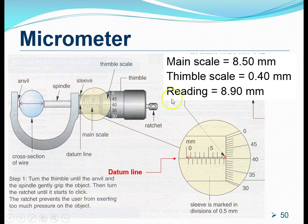And finally, therefore, the reading itself refers to the length or diameter of the wire. This is found by simply taking the main scale and the thimble scale and summing them together. That will give us 8.90 millimeters long.